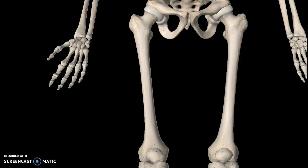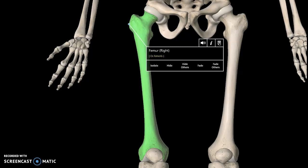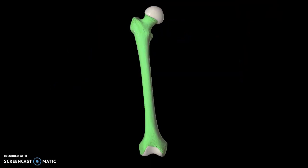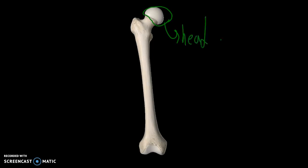Hi guys, we're going to talk about the femur today, which is this structure shown in green. There are a few structures to pay attention to on the femur. The first one is known as the head of the femur. Moving down a little bit, this specific structure is the neck of the femur.